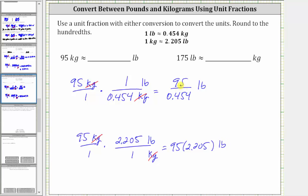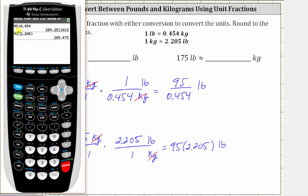And now let's determine the quotient and product on the calculator. We are told to round to the hundredths place value. For the quotient, if we round to the hundredths place value, we round down, and therefore we have approximately 209.25 pounds. For the product, there's a five in the hundredths place value, and therefore we round up, and we have approximately 209.48 pounds.